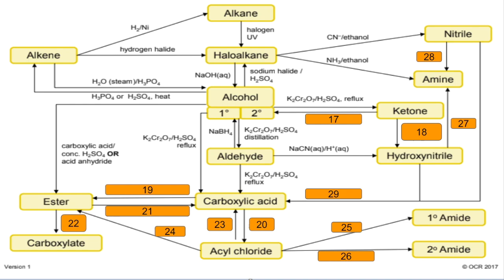Number seventeen: another reduction reaction — ketone to secondary alcohol, same reducing agent, NaBH₄. Number eighteen: ketone to hydroxynitrile — sodium cyanide and aqueous acid. Number nineteen: carboxylic acid to ester — react it with an alcohol in the presence of a concentrated sulfuric acid catalyst and you would heat that. Number twenty: carboxylic acid to acyl chloride — react it with thionyl chloride, SOCl₂.